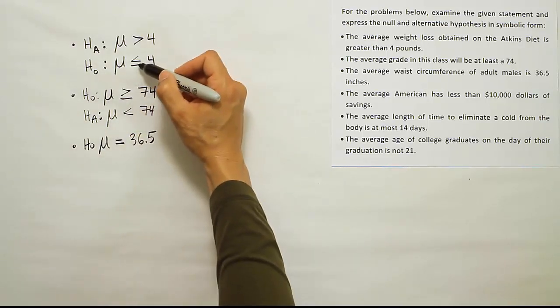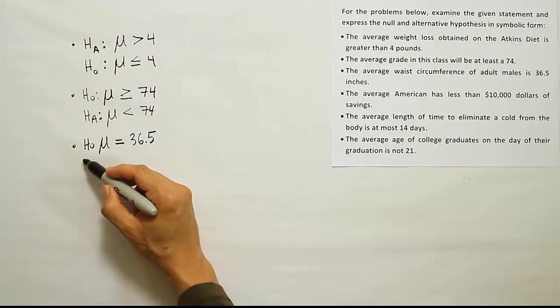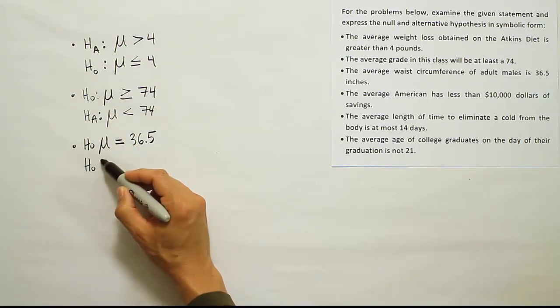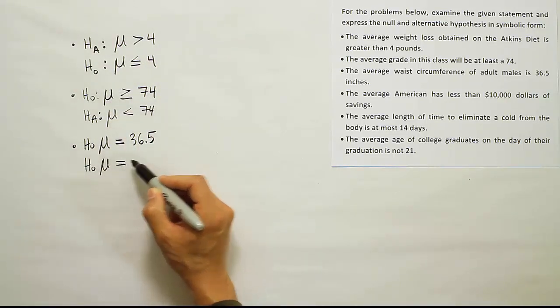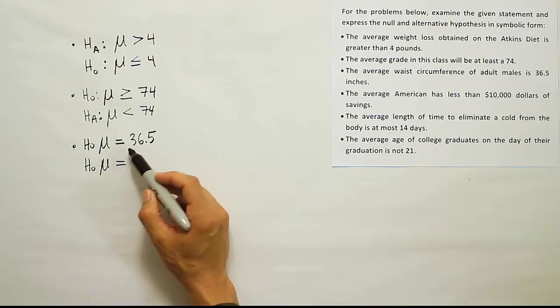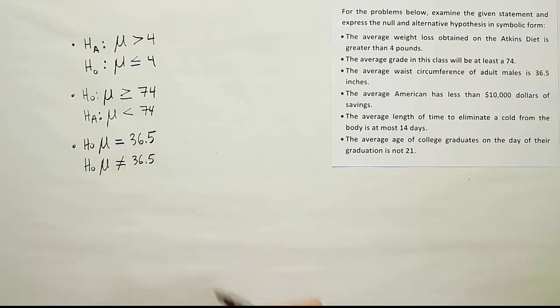The alternative hypothesis is going to be the complement of that. If you're not this, it must be not equal to 36.5. So that's the first three done. Let's do the next three right next door to these.